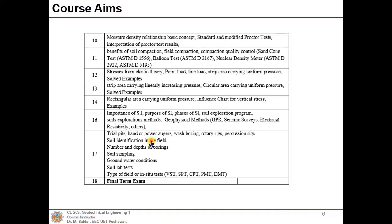After the midterm we start with moisture-density relationships, standard and modified Proctor tests, and interpretation of Proctor test results, followed by benefits of soil compaction, field compaction, and compaction quality control using tests such as sand cone, balloon, and nuclear density meter tests.